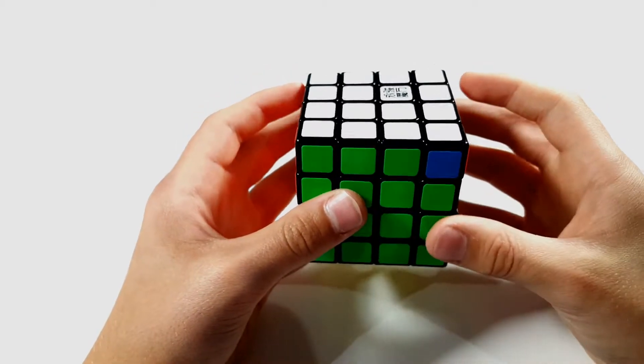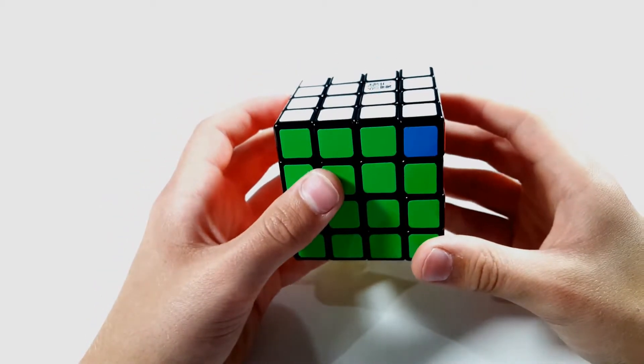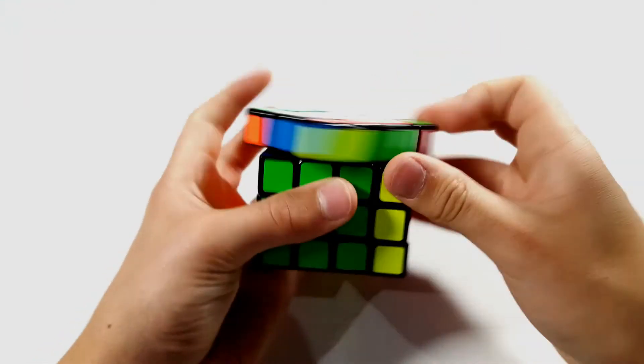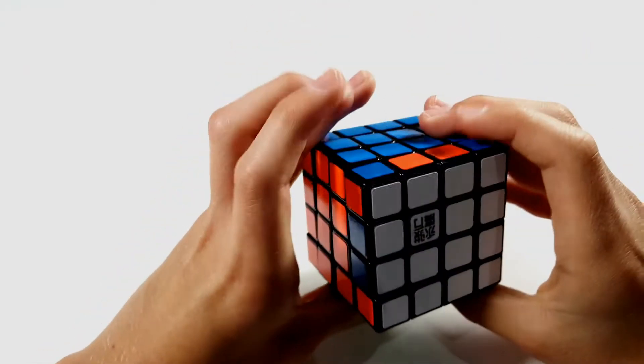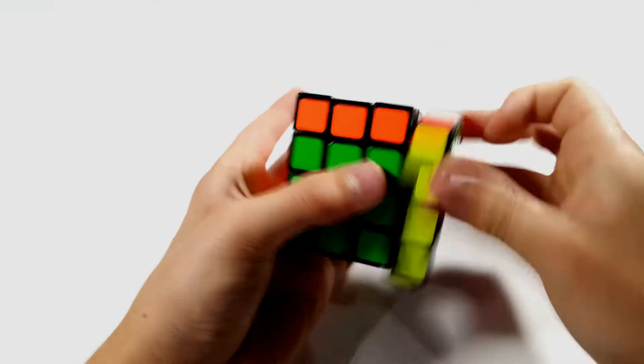So in general, when you get this case on 4x4, it can be pretty annoying. Normally you'd have to do like a Y perm and then have to do PLL parity in the back, but that can be really bad.